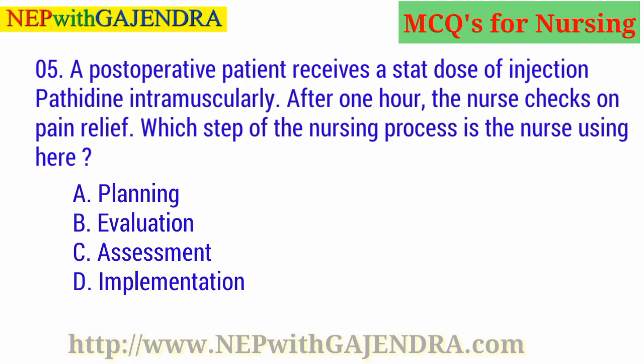A post-operative patient receives a stat dose of injection pethidine intramuscularly. After one hour, the nurse checks on pain relief. Which step of the nursing process is the nurse using here? A. Planning. B. Evaluation. C. Assessment. D. Implementation. The right answer is B: Evaluation.